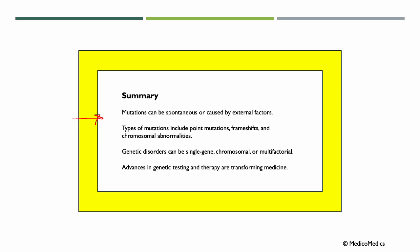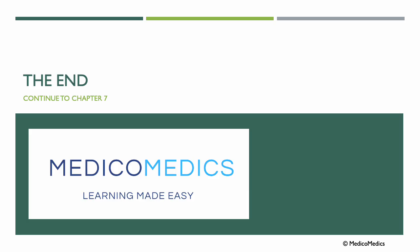In summary: mutations can be spontaneous or caused by external factors. Types of mutations include point mutations, frameshifts, and chromosomal abnormalities. Genetic disorders can be single gene, chromosomal, or multifactorial. Advances in genetic testing and therapy are transforming medicine. That's the end of Chapter 6 — continue now to Chapter 7. Thank you for listening.